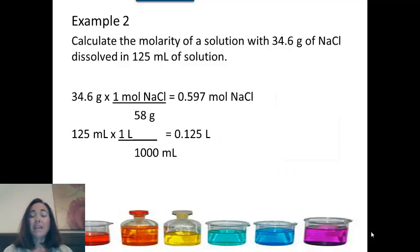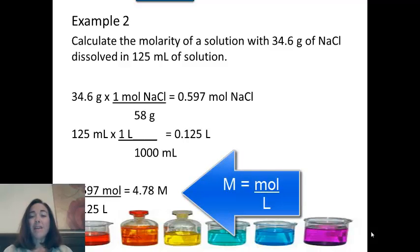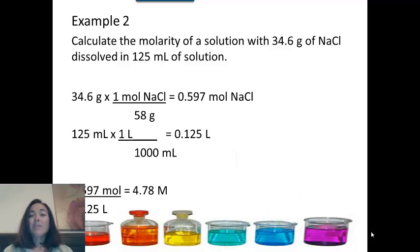And then finally, take those two numbers just like we did before and divide them. 0.597 divided by 0.125, and you get a molarity of 4.78. So this is a pretty concentrated solution of sodium chloride. So that's how you do molarity, and the number is going to tell you how much solute is in your solution.